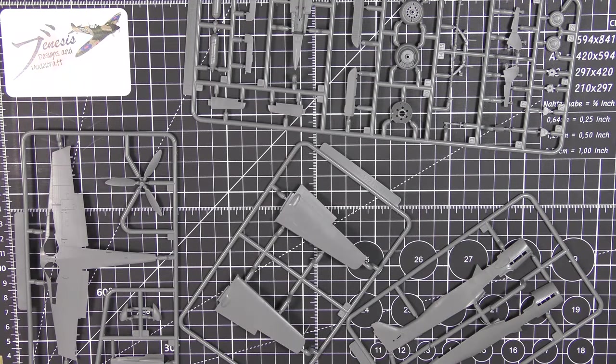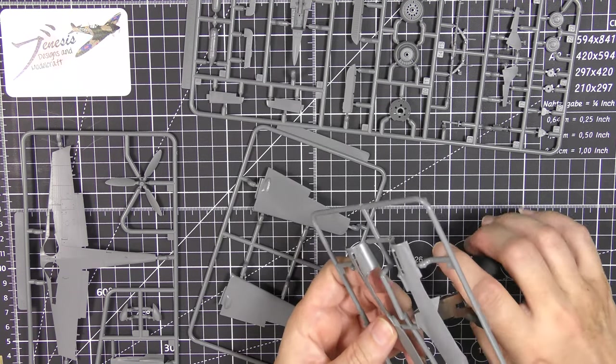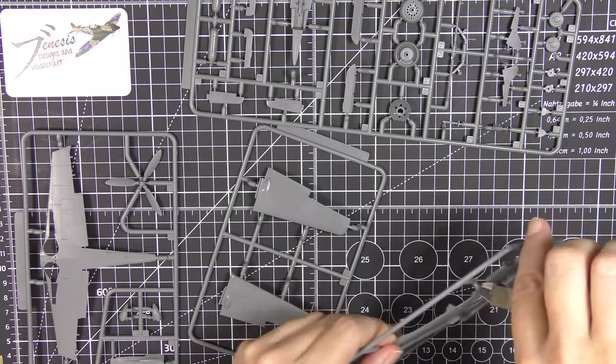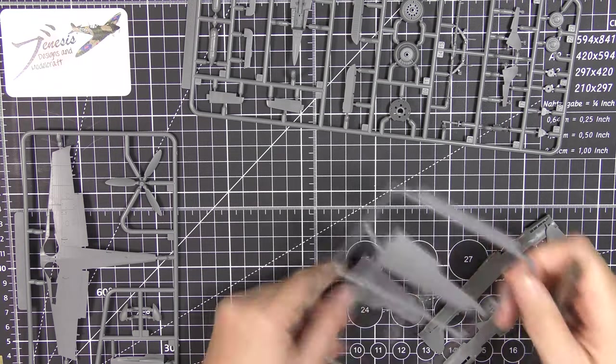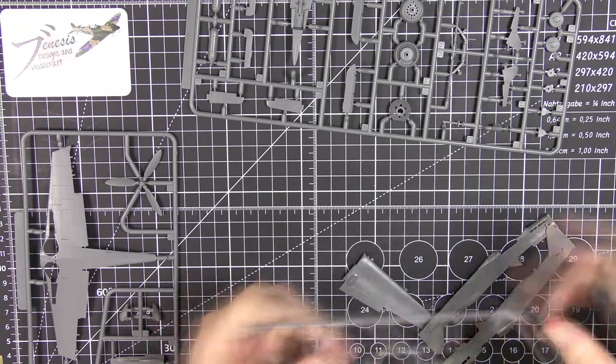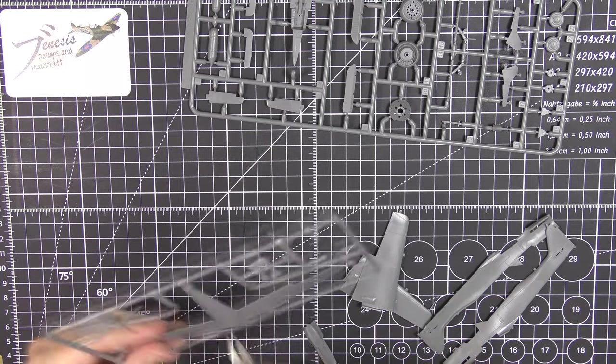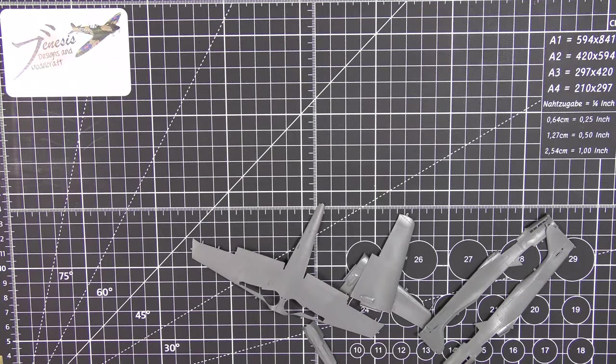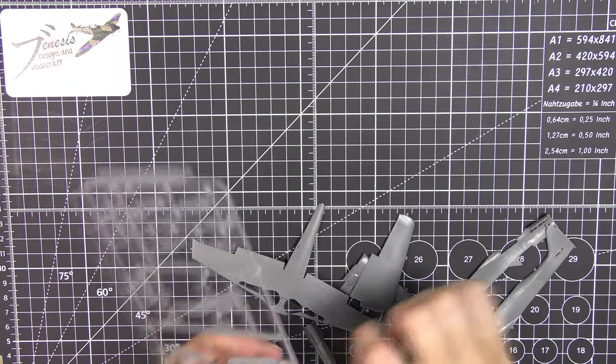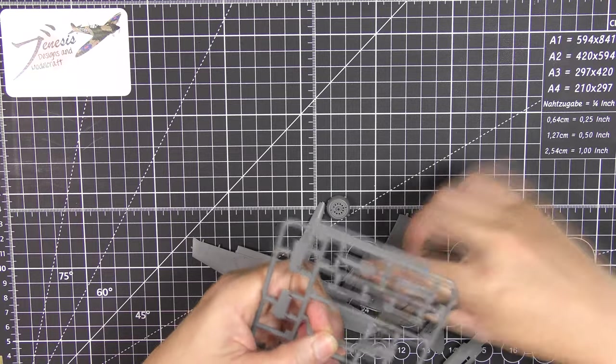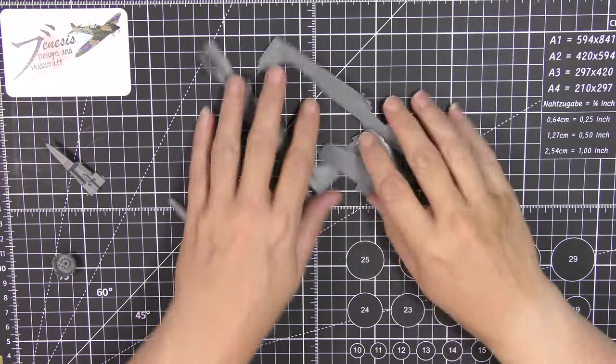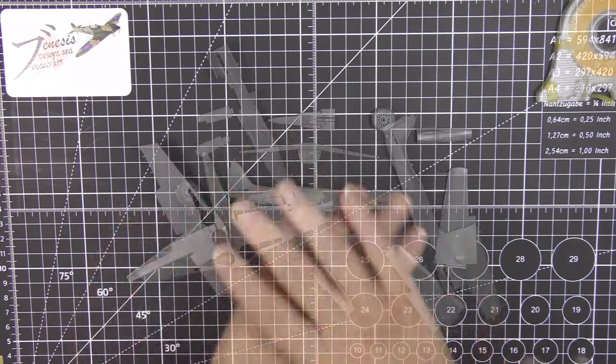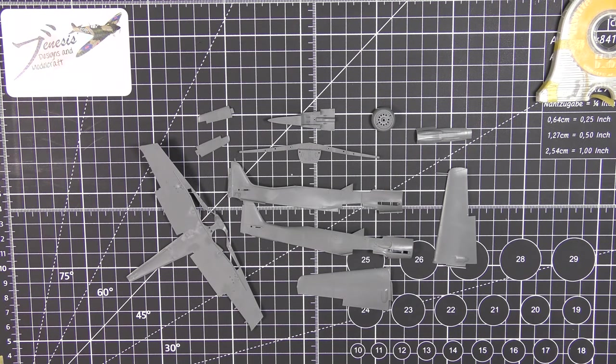All righty then, let's get snipping, just the main basic airframe parts. Okay then, we have snipperudo and now we have a nice little set of parts.